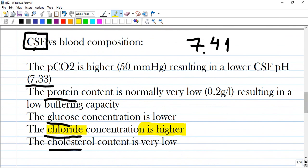Next facts regarding CSF and blood composition in comparison. The pCO2 is higher in cerebrospinal fluid, 50 mmHg, resulting in a lower CSF pH of 7.33. A normal pH in blood is 7.41.